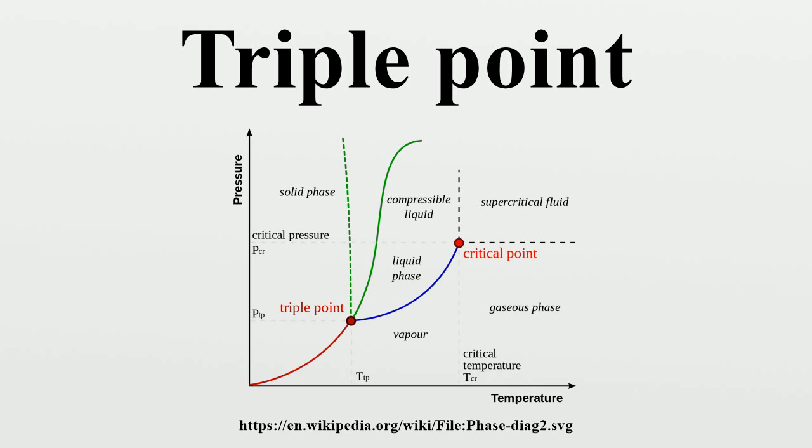The melting point of ordinary ice decreases as a function of pressure, as shown by the dotted green line in the phase diagram. At temperatures just below the triple point, compression at constant temperature transforms water vapor first to solid and then to liquid.